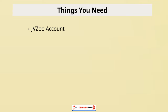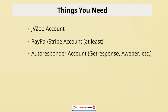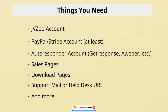Before I end this video, I want to talk about what you need. Obviously you need a JVZoo account and a payment processor account such as PayPal or Stripe — you want PayPal at minimum. Without having a Stripe account you will lose money if you're not offering it as an option. You also want an autoresponder account such as GetResponse or AWeber, your sales pages, download pages for your front-end offers and one-time offers, and a support email or help desk URL.